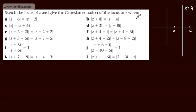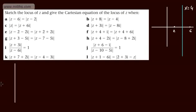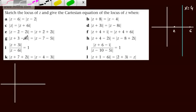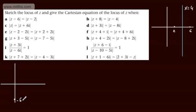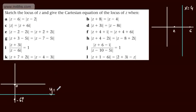For the modulus of z equal to the modulus of z plus 6i, we locate the two purely imaginary points: 0 and minus 6i. If we want the Cartesian equation of the locus — the perpendicular bisector — we can see that y is going to be equal to minus 3.